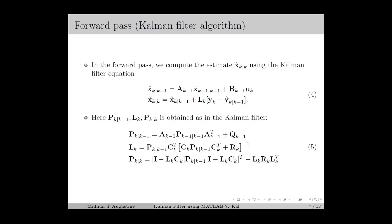Let's start with the forward pass algorithm, which is the same as the Kalman filter algorithm. In the forward pass, we compute the estimate x̂k|k using the Kalman filter equation given in equation 4. The first stage is the prediction step, in which we predict x̂k|k-1 using the system model. The second stage is the correction step, in which we add the sensor-based correction term to the predicted state. The variance matrices Pk|k-1 and Pk|k, and the estimator gain Lk, are obtained as in equation 5. Lk gives the optimum value minimizing the variance of the estimation error, and Pk|k gives that variance. This equation is known as the DRE for the Kalman filter.